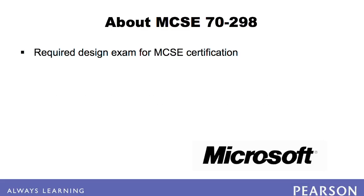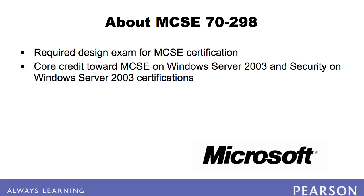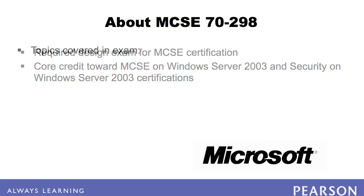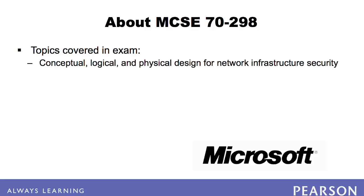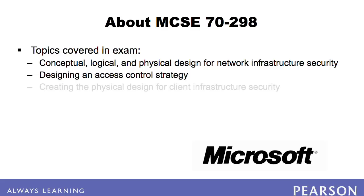The 70-298 is the required design exam that must be taken for MCSE certification. It counts toward both the Windows Server 2003 and Security on Windows 2003 certifications. The 70-298 exam covers the conceptual, logical, and physical design for network infrastructure security, designing an access control strategy, and creating the physical design for client infrastructure security.